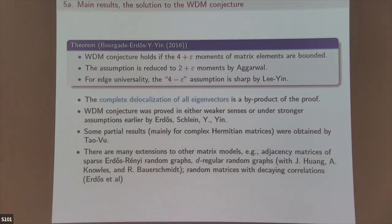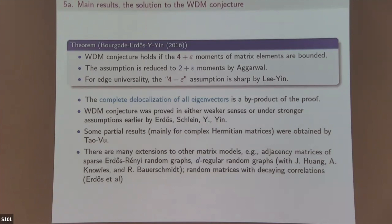At the edge, a sharp condition was proved — an exact transition line where the result is correct. As a byproduct of the proof we also get complete delocalization of all eigenvectors. There are many extensions: results for different cases, with collaborators including young people — Tao and Vu have some partial results; there are also results for the complex and real cases, though those are quite limited.